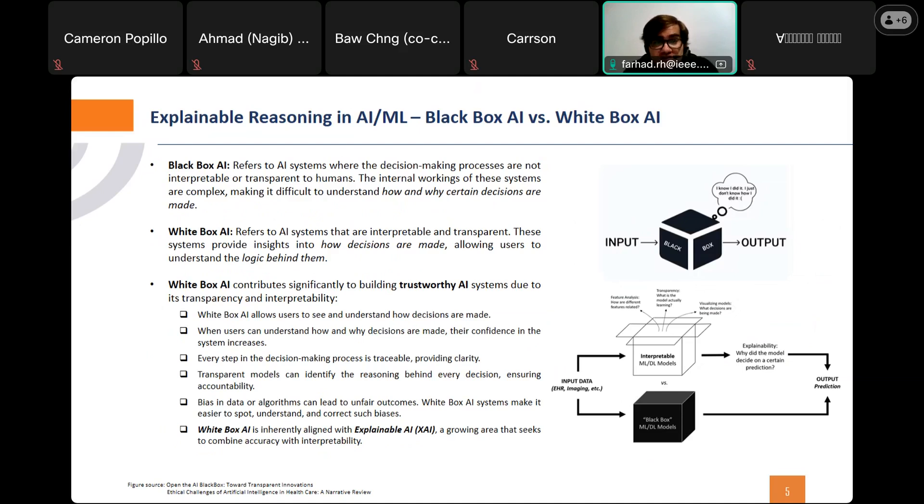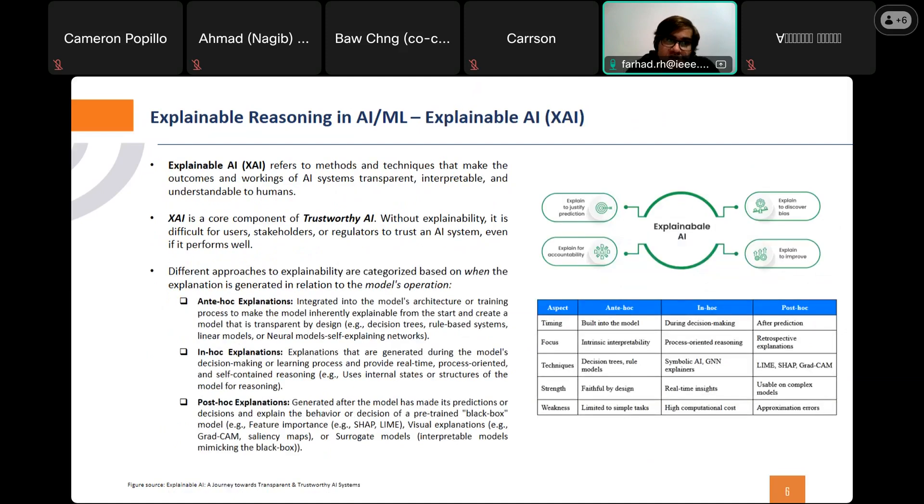But what is explainable AI? Explainable AI seeks to make AI systems interpretable without sacrificing the performance. This is particularly important in regulatory environments where transparency is essential for compliance.